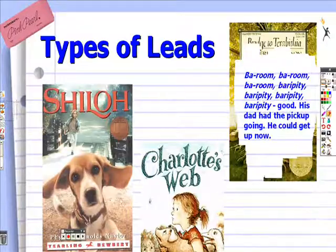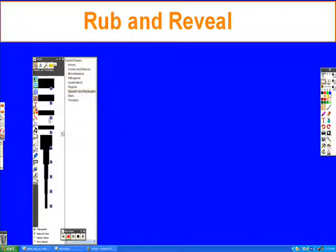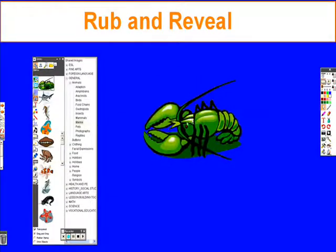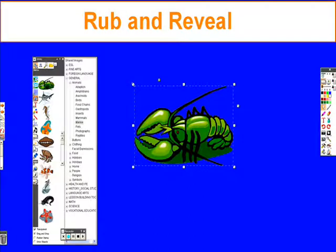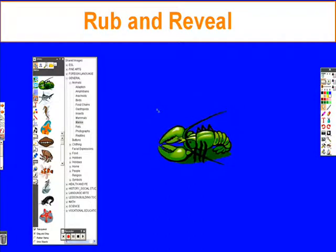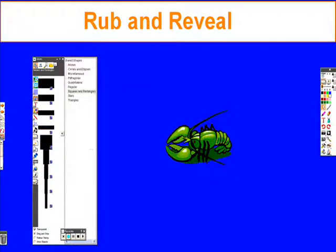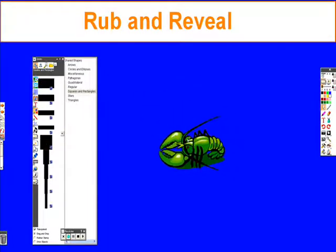Let's look at how to make those. To make a rub and reveal, first you need to pull something out to be hidden. In this case, I'll grab the little green crawfish. Remember, everything that comes out of the resource library is actually on the middle layer, which is exactly where we want it for the rub and reveal. This crawfish can be left to move around.